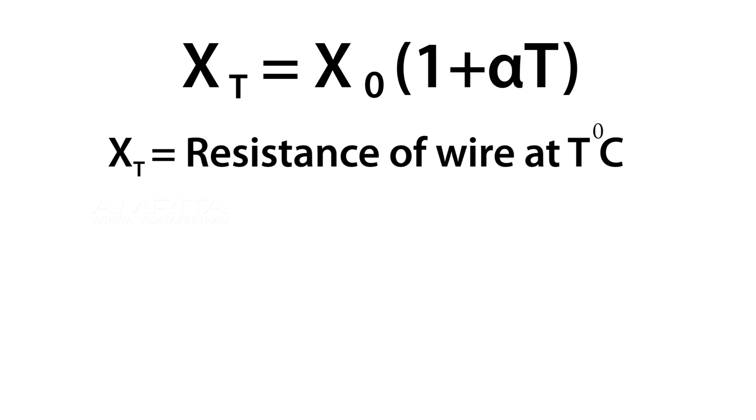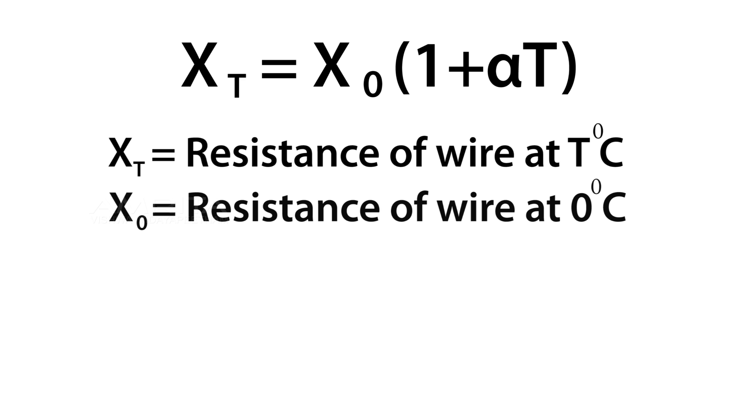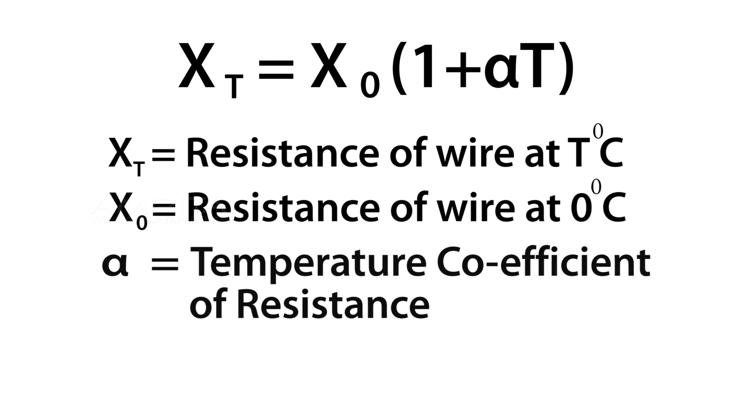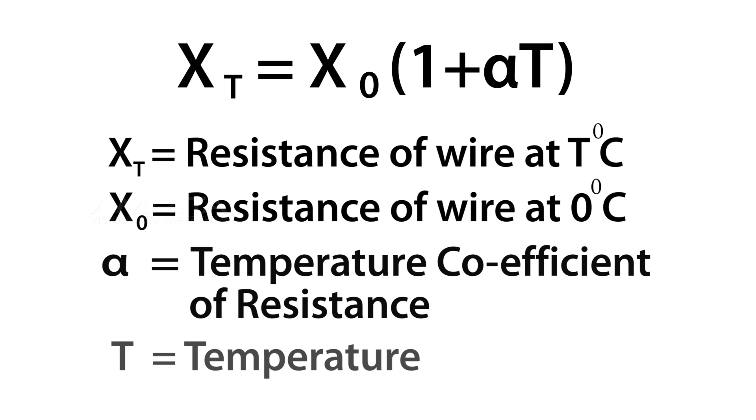Where X_T equals resistance of wire at T degrees Celsius and X_0 equals resistance of wire at 0 degrees Celsius. Alpha equals temperature coefficient of resistance. T equals temperature.